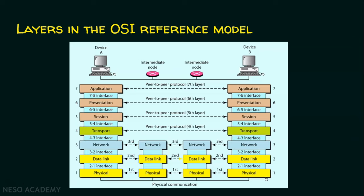Always remember: layer 1 is physical layer, layer 2 is data link layer, layer 3 is network layer, layer 4 is transport layer, layer 5 is session layer, layer 6 is presentation layer, and layer 7 is application layer. And there will always be an interaction between adjacent layers.